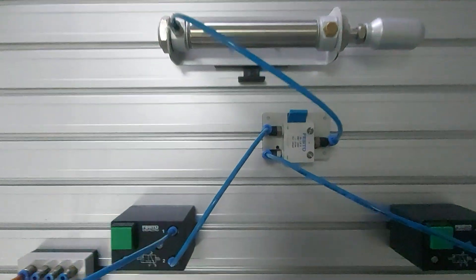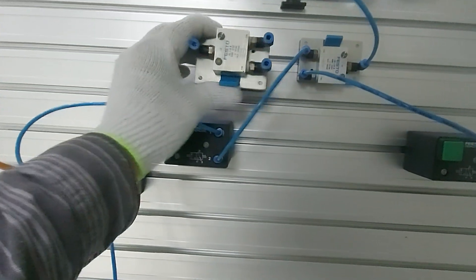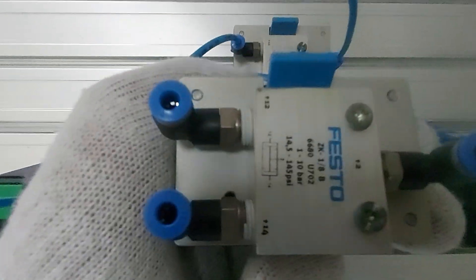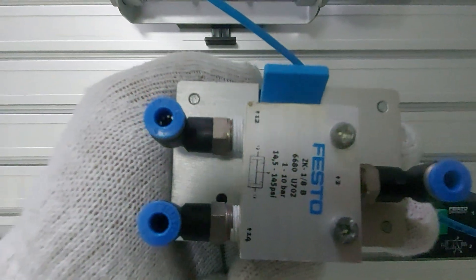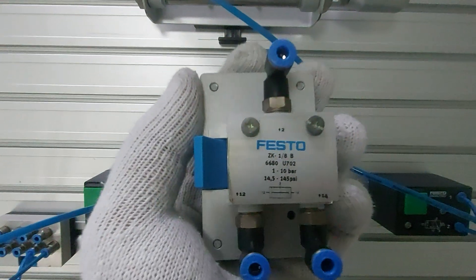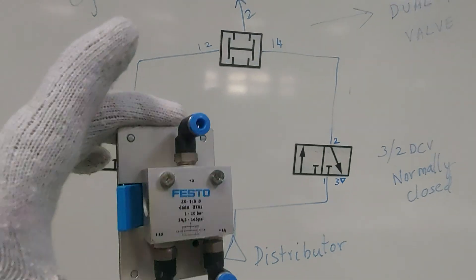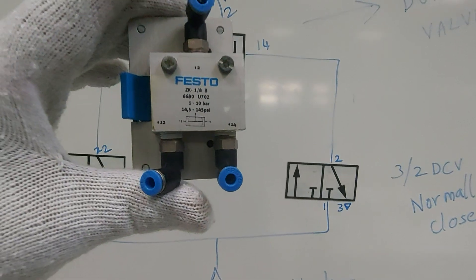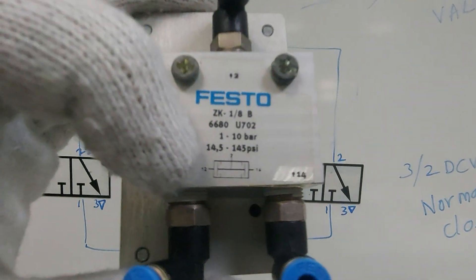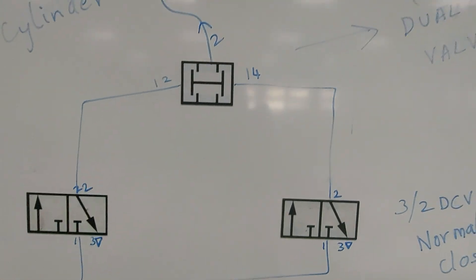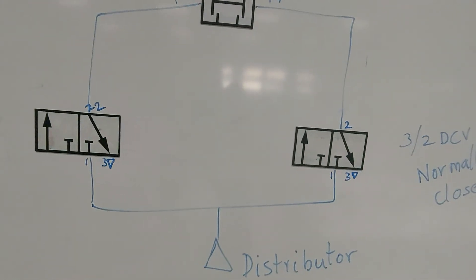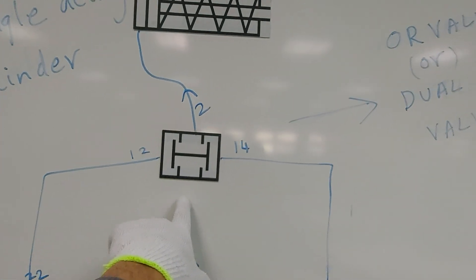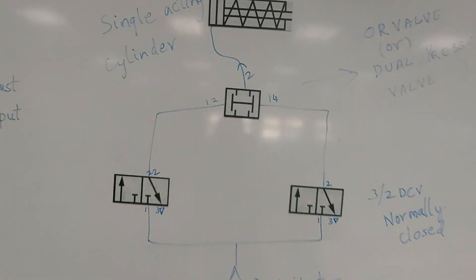That was the AND valve or shuttle valve. Now there is another valve which looks similar to that — but there is a slight difference: you don't see a ball inside this valve. So this valve is the OR valve, or dual pressure valve. The circuit diagram for the OR valve or dual pressure valve looks almost the same as the AND valve, but there is no ball inside the box. The circuit is the same: distributor, two normally closed direction control valves, then the OR valve, then the single acting cylinder.